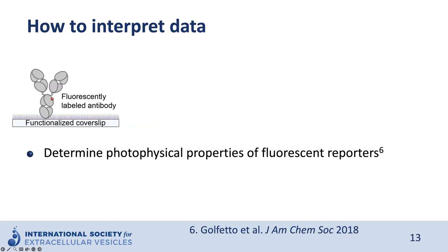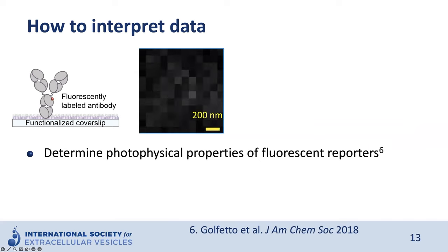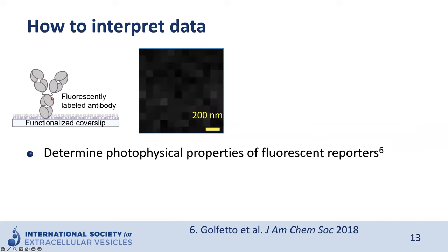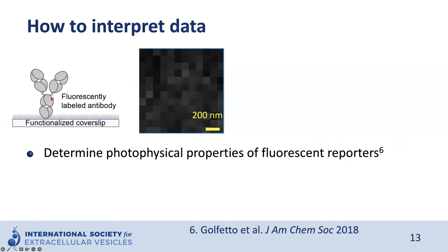One way to define the photophysical properties of fluorescent reporters — such as a fluorescently labeled antibody — is to image them isolated on a surface. For this calibration, we need to use the same imaging conditions and parameters used to image EVs. For example, a fluorescent reporter may appear three times before being photobleached. We assess many spots, determine the average number of localizations per fluorescent reporter, and use this value to calculate the detected molecular density.